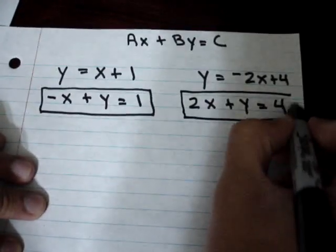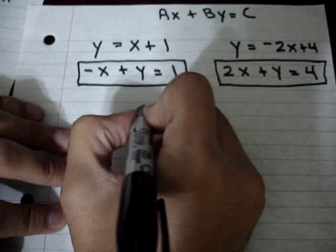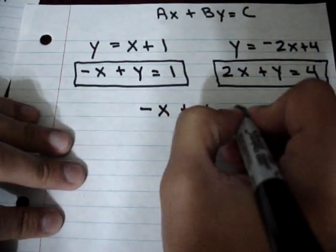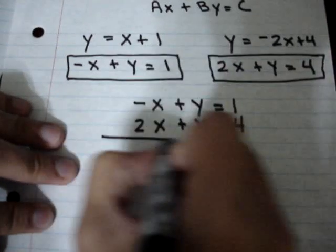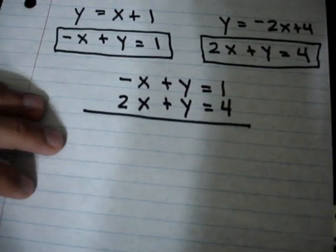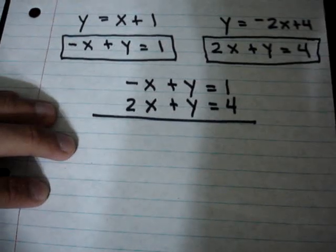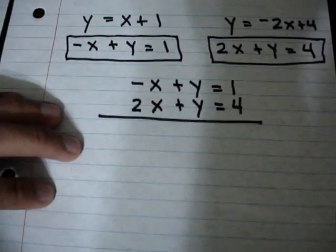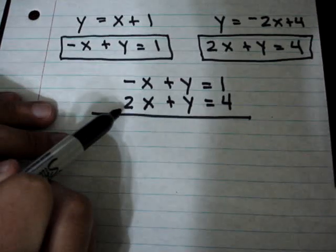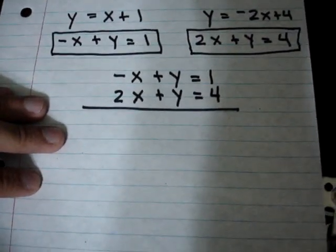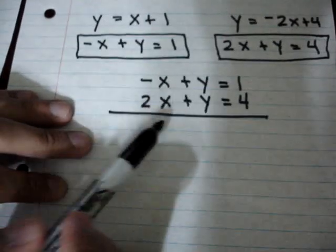Now that we have both equations in standard form, what you want to do is put one equation on top of the other. It should look like this: negative x plus y is equal to 1, and on the bottom, 2x plus y is equal to 4. This is called the elimination method because you're trying to eliminate one of the variables, whether it's x or y. The x variable looks difficult to eliminate because negative 1 plus 2 is not 0. So we look at the y variable — it would be easy to eliminate if one of the y's was negative, because then 1 minus 1 is 0 and you could cross them out.